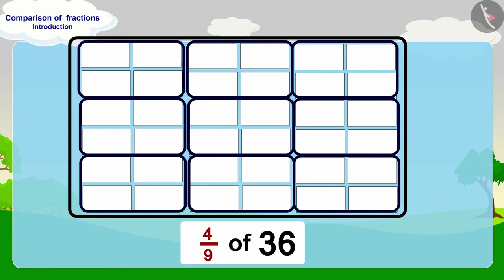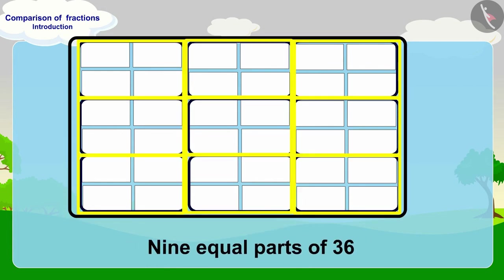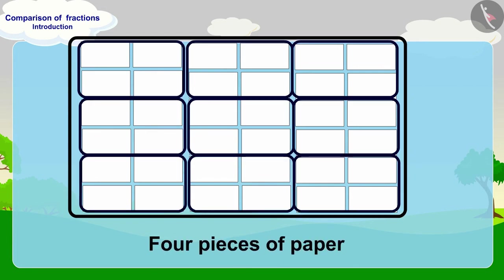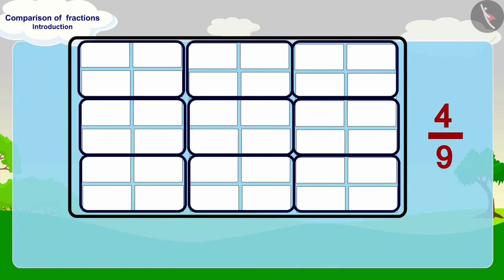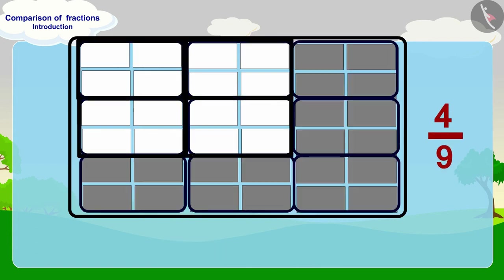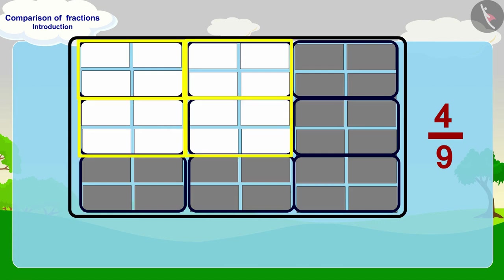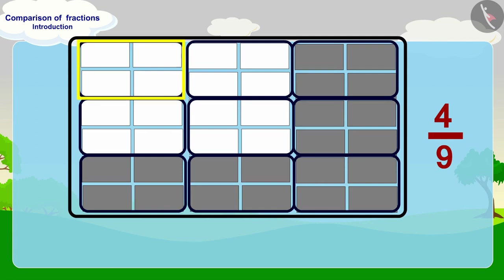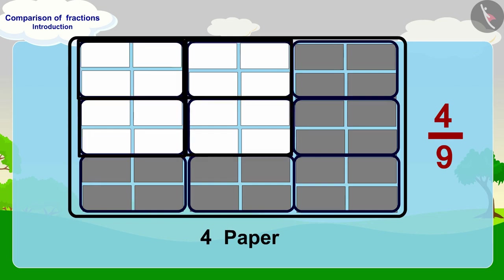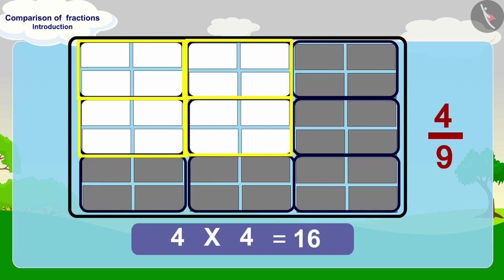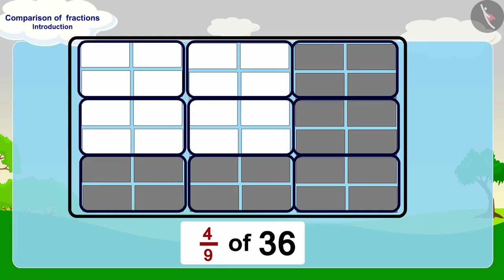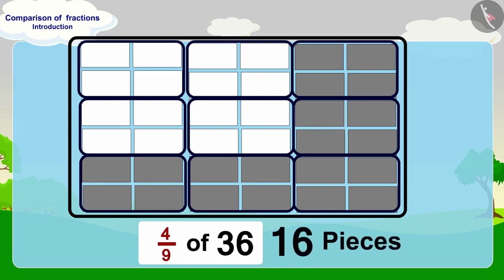For four ninths of 36, we will divide 36 into nine equal parts. In this way, each part will have four pieces of paper. And in four ninths, we are taking four of these nine equal parts. There are four pieces of paper in one part of this fraction, so how many pieces will there be in four parts? Four times four — sixteen pieces of paper. In this way, four ninths of 36 is sixteen.